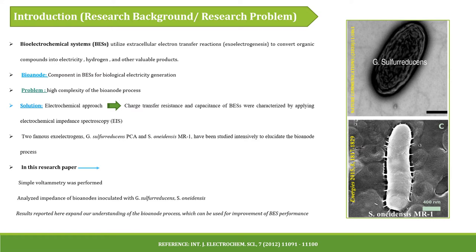The bioanode is a crucial component in bio-electrochemical systems for biological electricity generation. Due to the high complexity of the bioanode process, it is hard to elucidate its electrochemical reactions. To understand the bioanode process better, researchers have utilized the electrochemical approach. Charge transfer resistance and capacitance were characterized by applying electrochemical impedance spectroscopy, also called EIS, and by analyzing transient potential responses. EIS is increasingly used to analyze the bioanode process due to its methodological convenience.